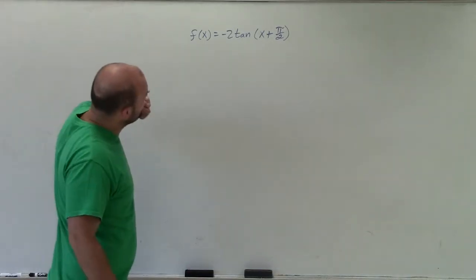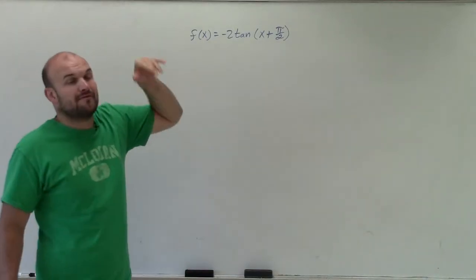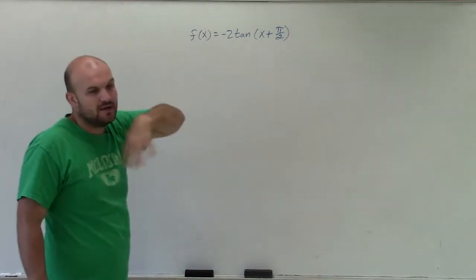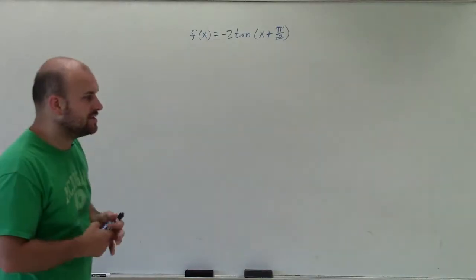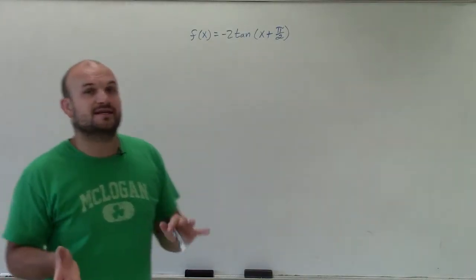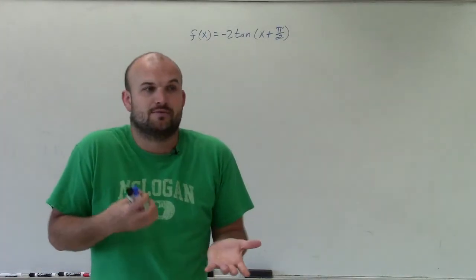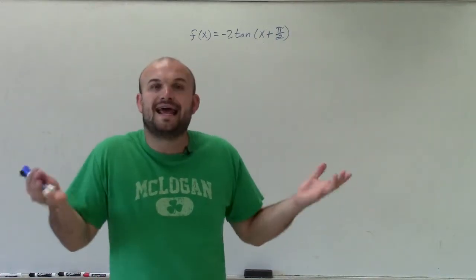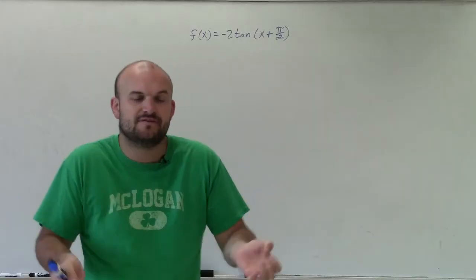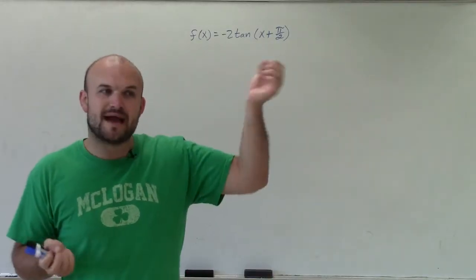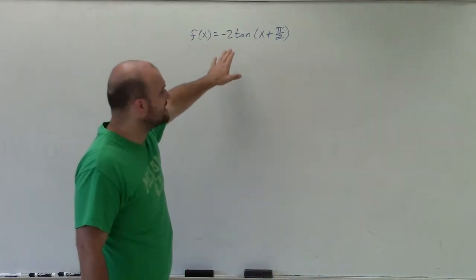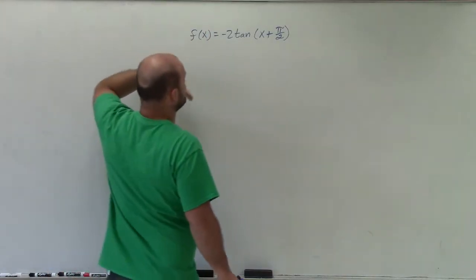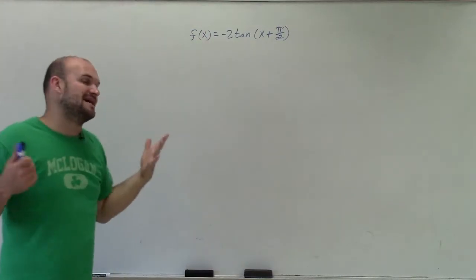The big thing is we notice that negative sign, so we're going to have a reflection over the x-axis. The other big misconception is we see a 2, and a lot of times students want to treat it just like sine and cosine and ask what the amplitude is. Remember, tangent, cotangent, cosecant, and secant do not have an amplitude. Amplitude is defined as the half distance from the maximum to the minimum — but tangent extends indefinitely to positive infinity and negative infinity, so there is no maximum and minimum.